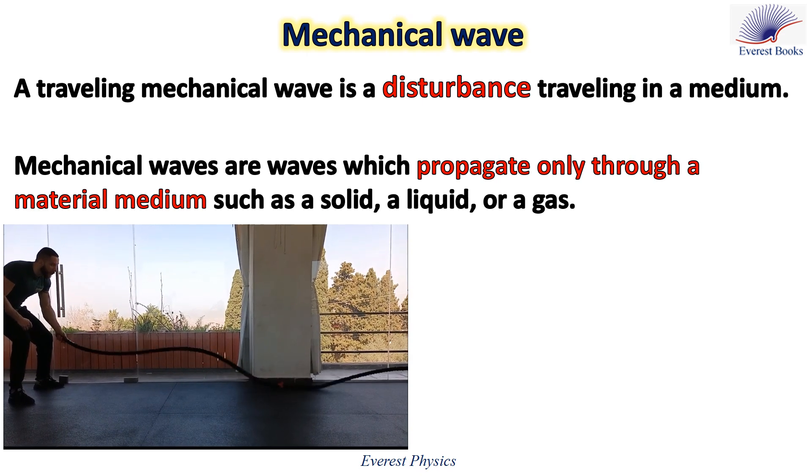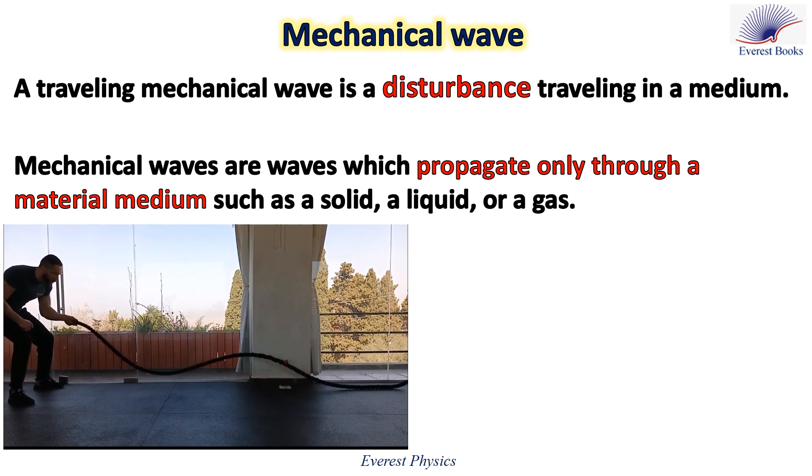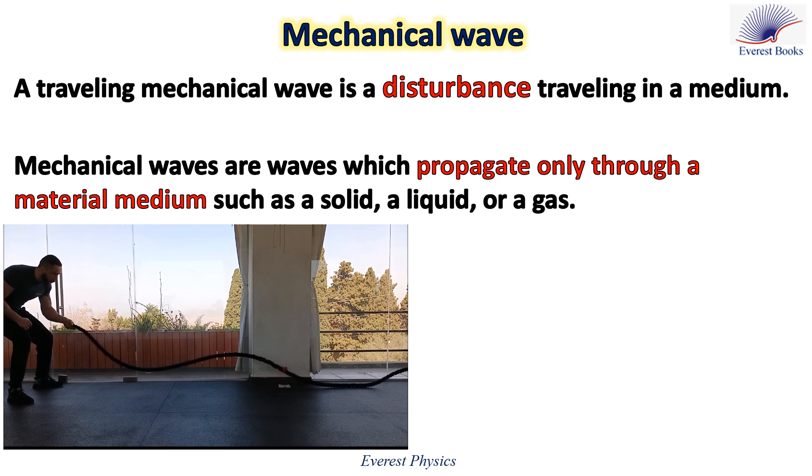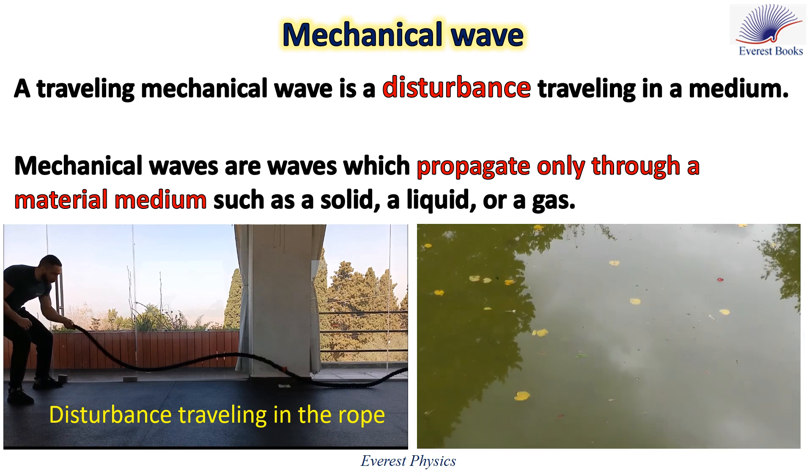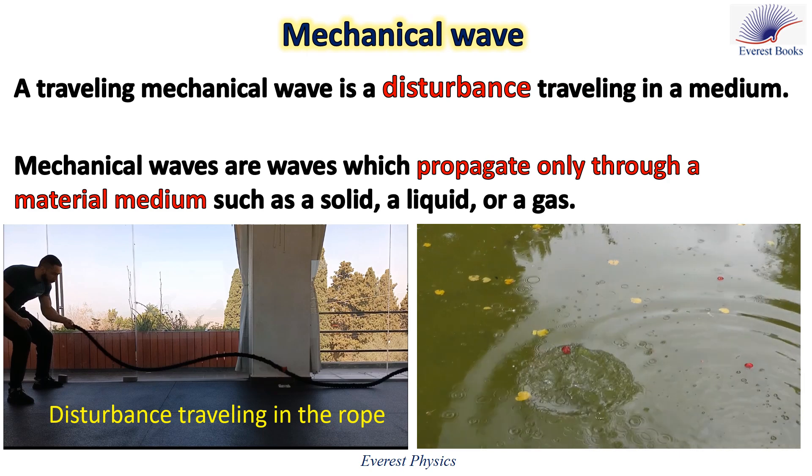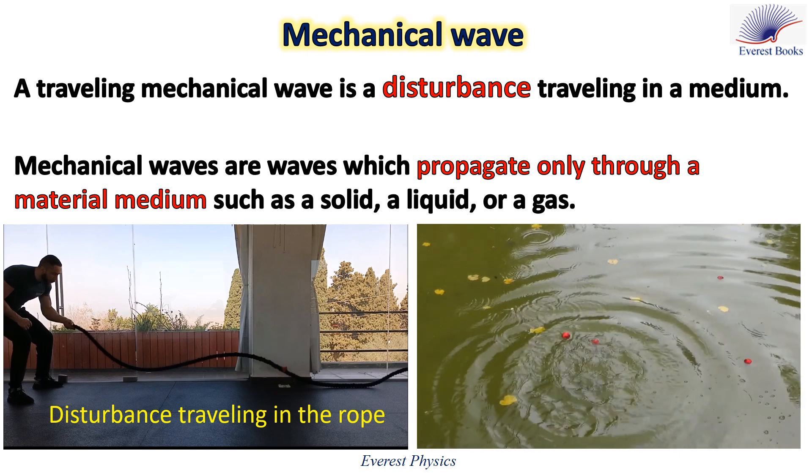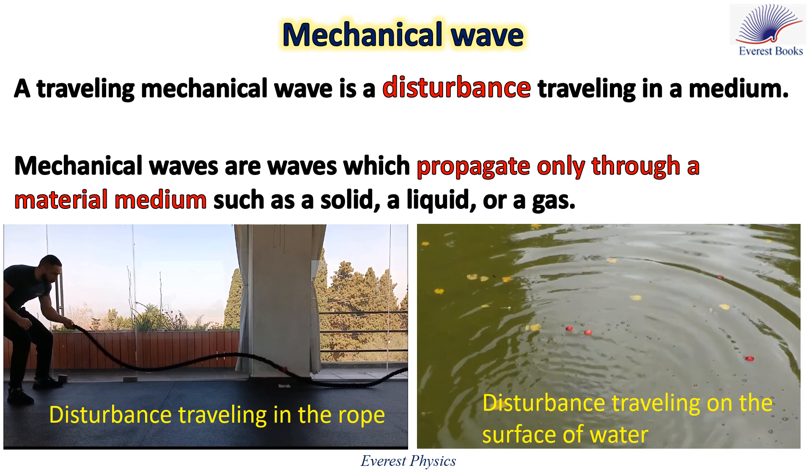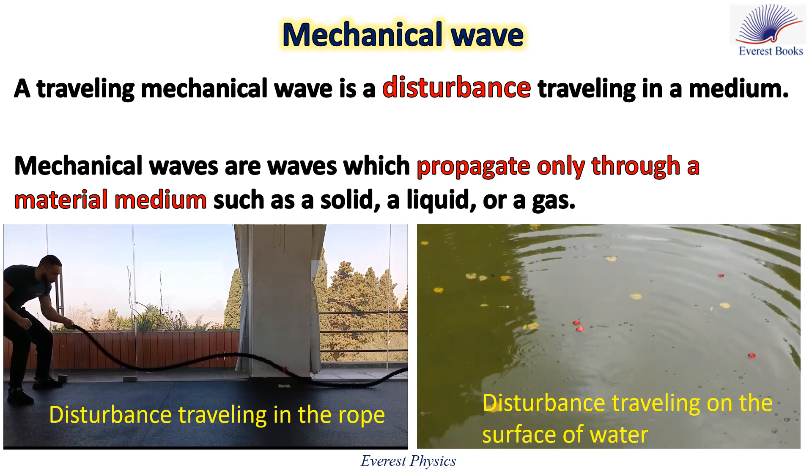Let's observe this video. A wave is created in a thick rope by moving head up and down. The medium where the disturbance is traveling in is the rope. Now look at the circular ripples traveling on the surface of water. The medium where the disturbance is traveling in is the water.